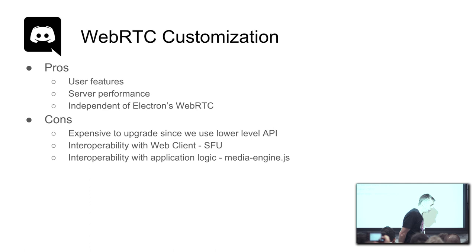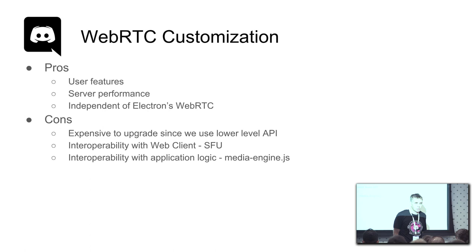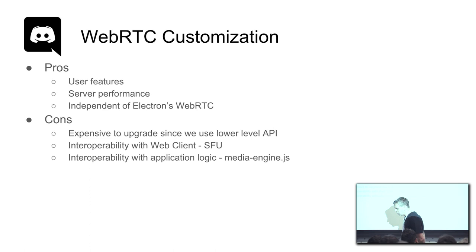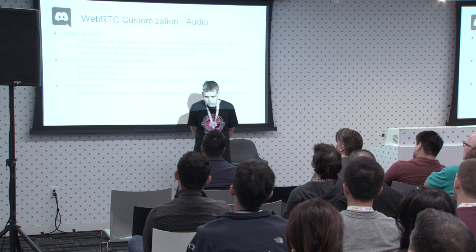We use Electron to run our desktop clients, and we are independent of the version of WebRTC that ships with Electron — we are on a slightly dated version, around WebRTC 56. On the flip side, it's pretty expensive to roll a WebRTC version, especially since we use lower-level APIs that are not stable. We also have to interoperate with our web client, which is taken care of by our SFU. On our application we develop our interoperability layer — the mediaengine.js — that provides a stable API for the application.